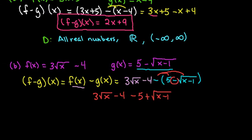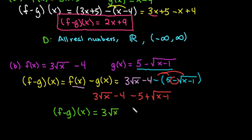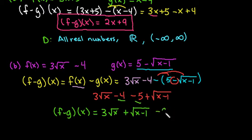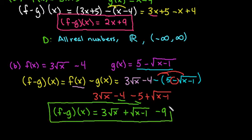We would then go through and combine any like terms for our final answer. So f minus g of x is equal to 3 radical x, plus the square root of x minus 1 — make sure you are very clear about where your radical ends — and then the only thing we can combine is negative 4 and negative 5, which gives us negative 9. So this would be our final answer.